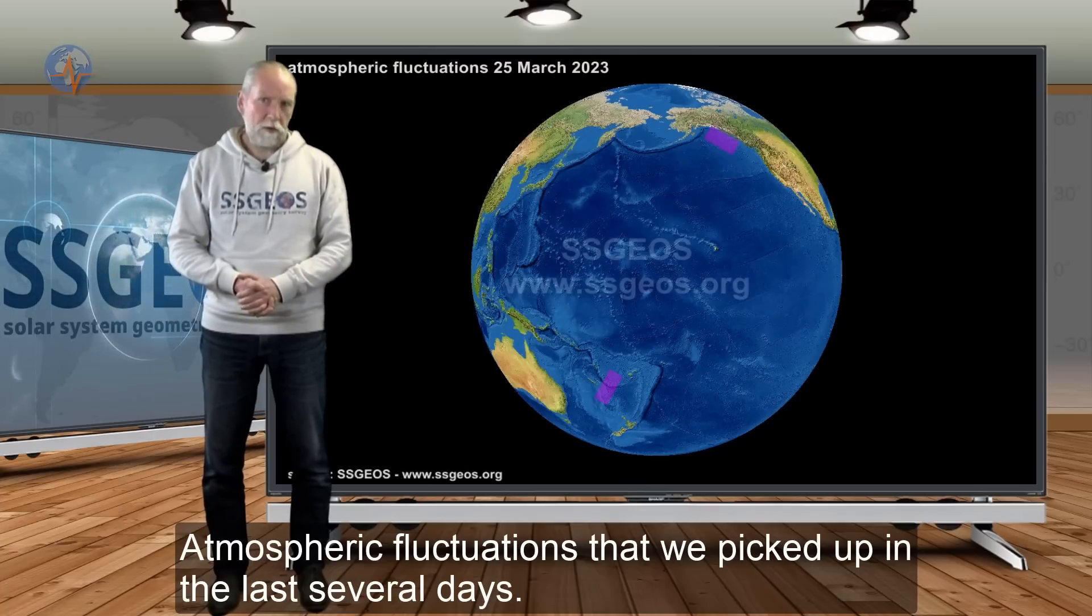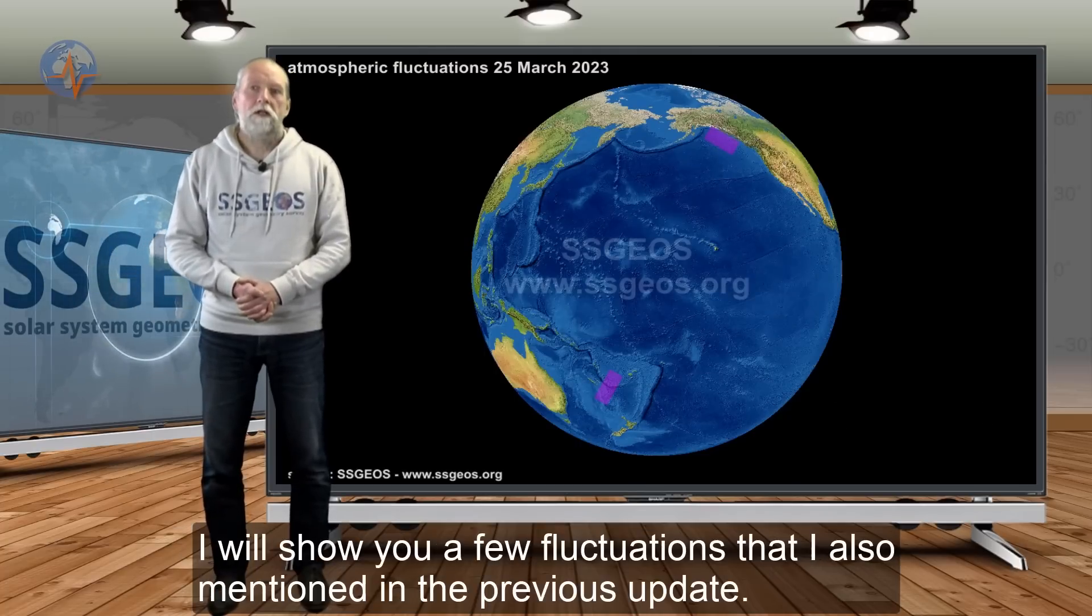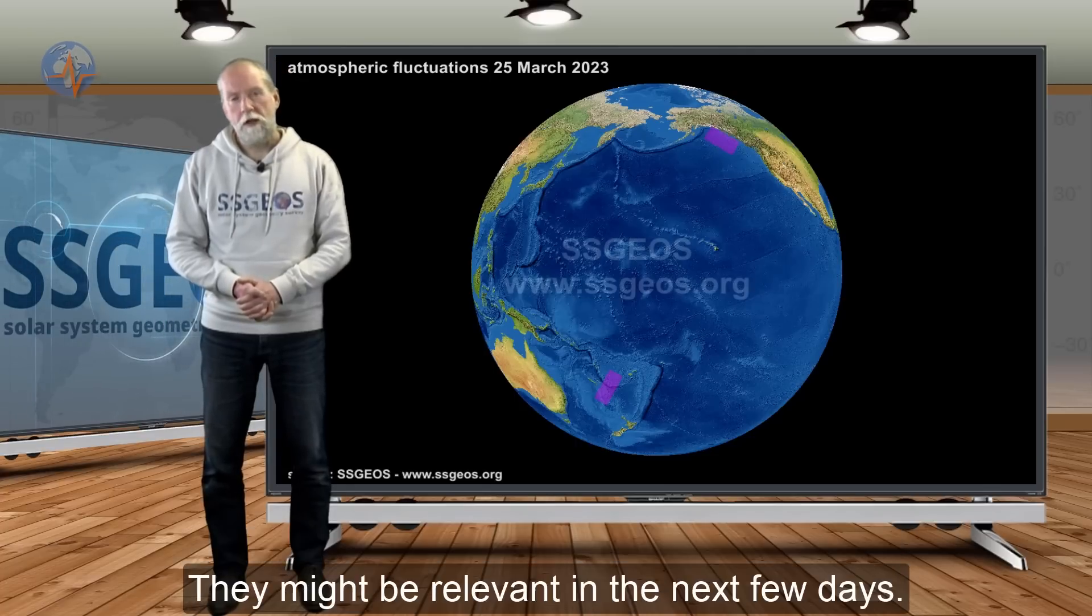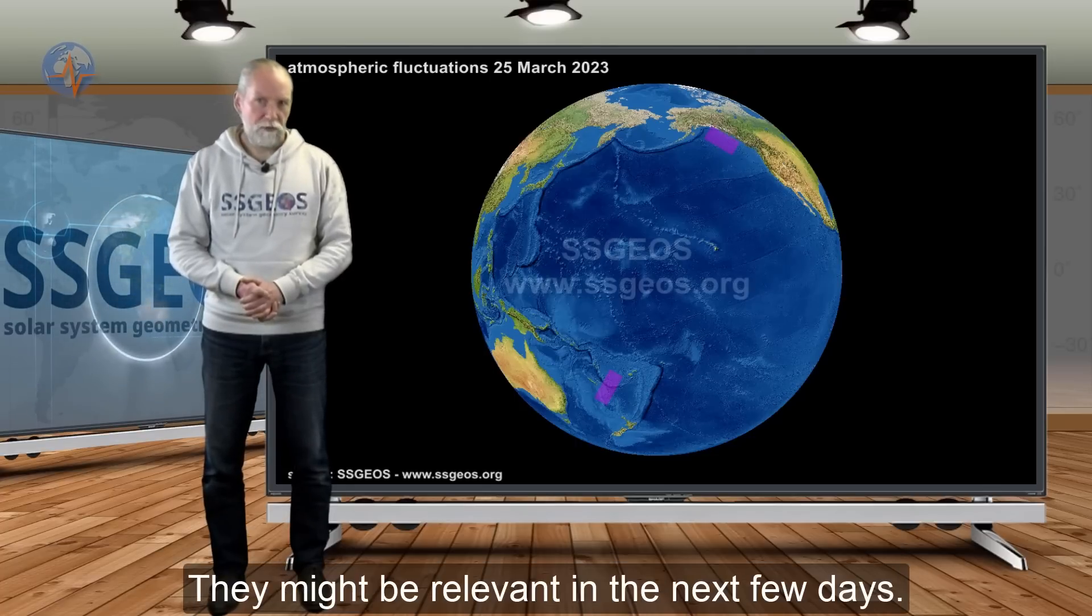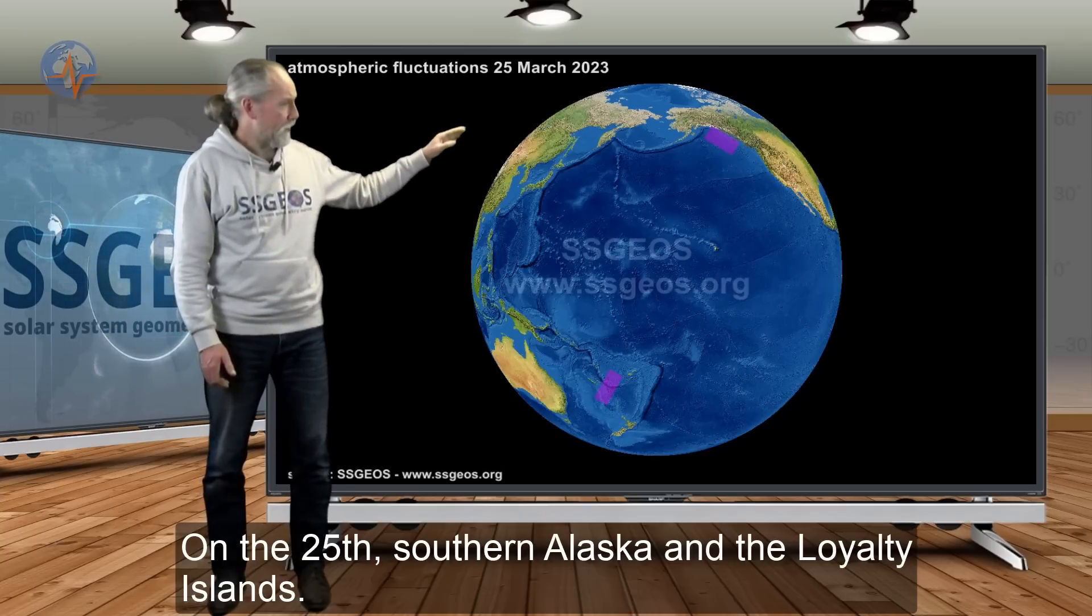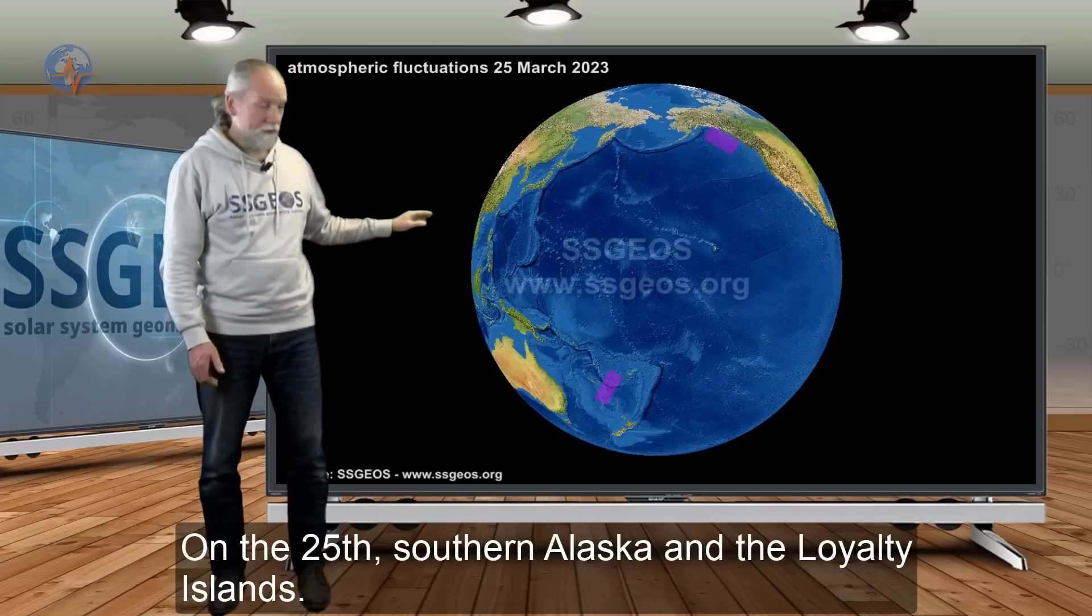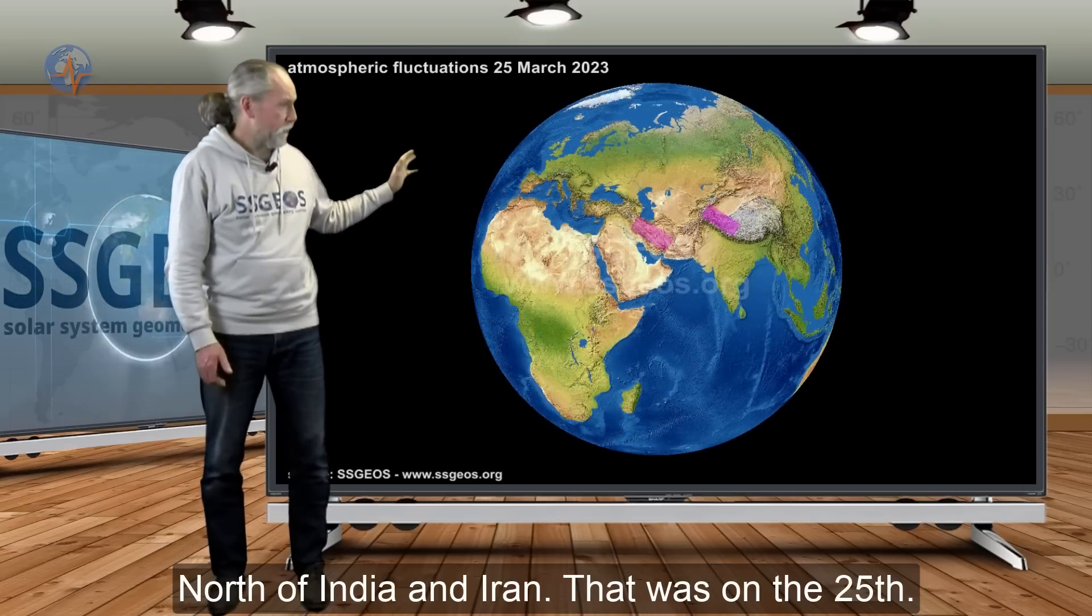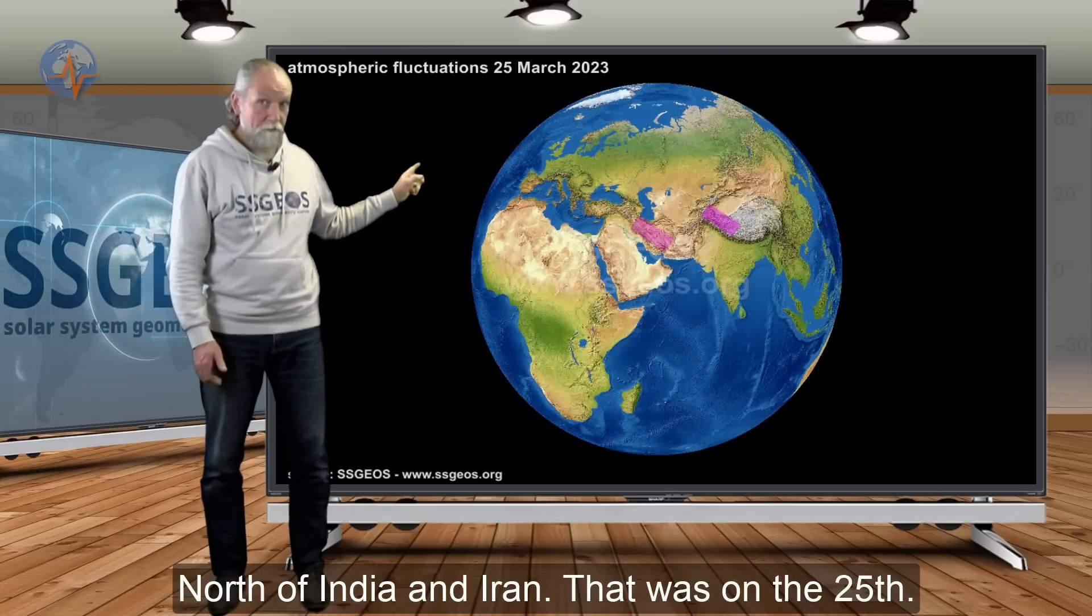Atmospheric fluctuations that we picked up in the last several days. I'm going to show you a few fluctuations that I also mentioned in the previous update because they might still be relevant in the next few days. And it was on the 25th: southern Alaska and also the Loyalty Islands, north of India and towards Iran. That was from the 25th.